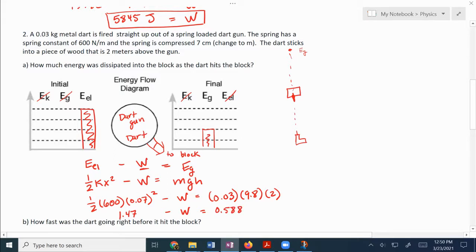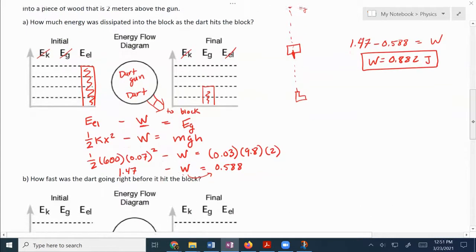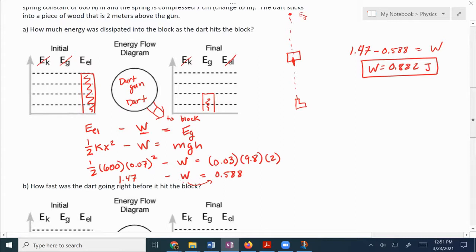So now 0.5 times by 600 times by 0.07 squared tells us that we start with 1.47 joules of energy minus W, and 0.03 times by 9.8 times by 2 says that we end with 0.588 joules of energy. So we start with 1.47, we end with only 0.588. So the question is, how much did we lose? We've got our 1.47 minus the 0.588 is equal to the W. I moved the W over to that side and then I subtracted the 0.588 over to the other side. And that's going to give you W is equal to 0.882 joules. So that's how much energy the block must have absorbed when the dart hit it.